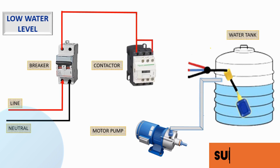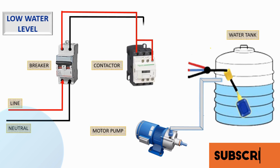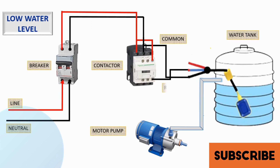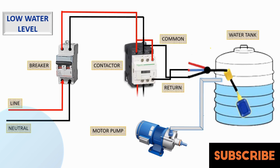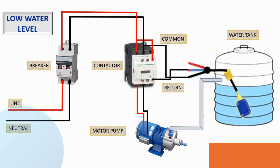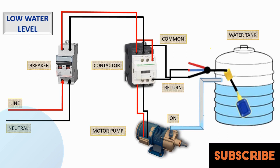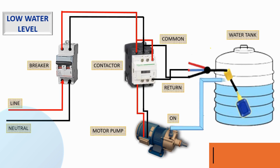Control circuit action: The control circuit monitors the status of the float switch. If the float switch indicates a low water level, it commands the motor to start. As the motor runs, water is drawn into the system, raising the float switch.